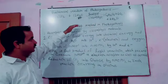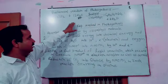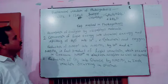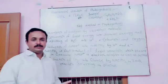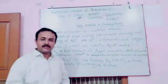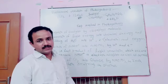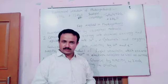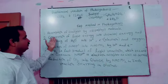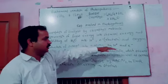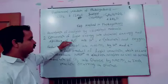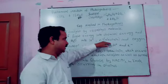Photosynthesis involves three steps. The first step is the absorption of sunlight by chlorophyll molecules. The chlorophyll molecules absorb sunlight. The second step is the conversion of light energy into chemical energy and the splitting of water into H+ ions, electrons, and oxygen.